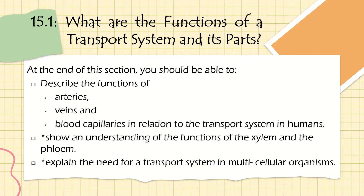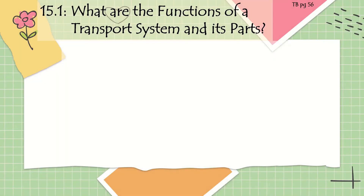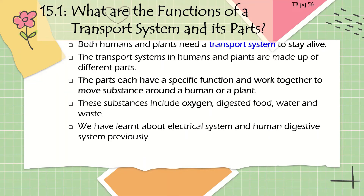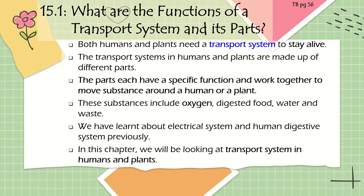We also need to explain why there is a need for this type of transport system in organisms that are multicellular. You may have learned in the previous chapter that organisms can be divided into unicellular or multicellular. Organisms like humans, animals, and plants are made out of many different cells - we are called multicellular organisms. So we humans and plants both need a transport system to stay alive. Inside our bodies and plants, these transport systems are made out of different parts, and in the same way we have different organs serving different functions, each part of the circulatory system works together to move things around in our body.